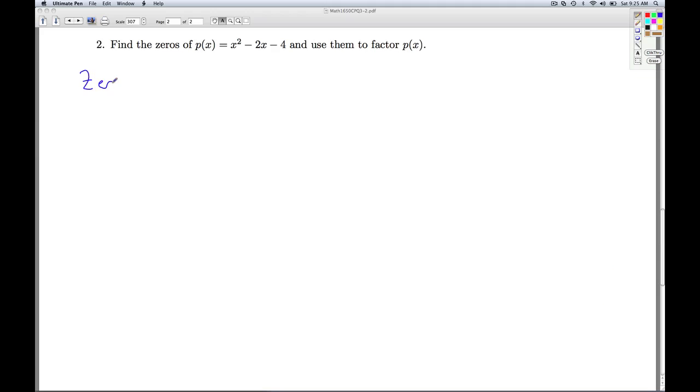So the zeros of p are x equals 1 plus square root of 5, x equals 1 minus square root of 5. So if x equals 1 plus square root of 5 is a 0, then I should be able to synthetically divide that in to my polynomial, which is what I'm going to do.